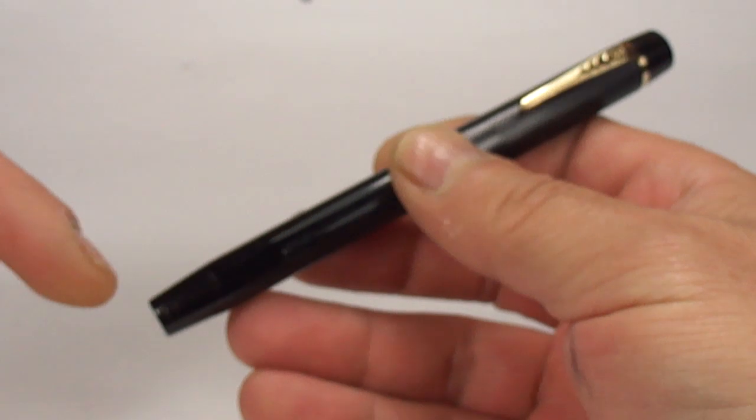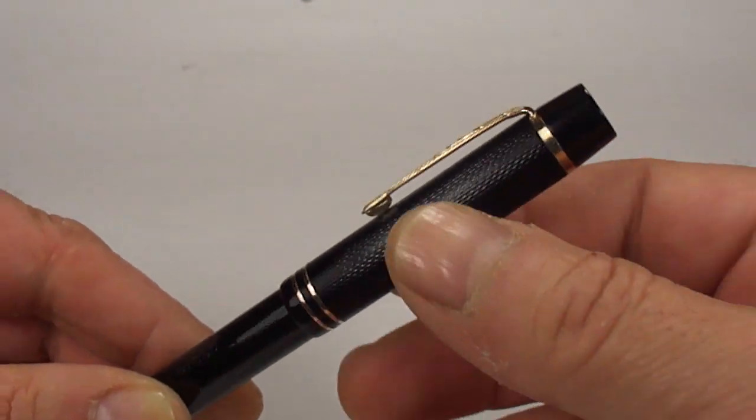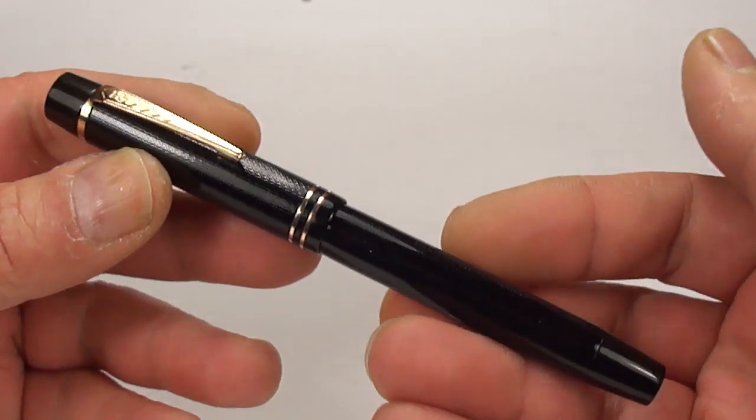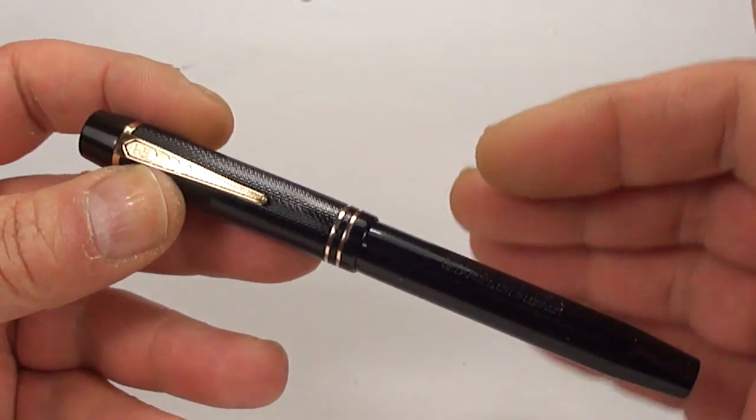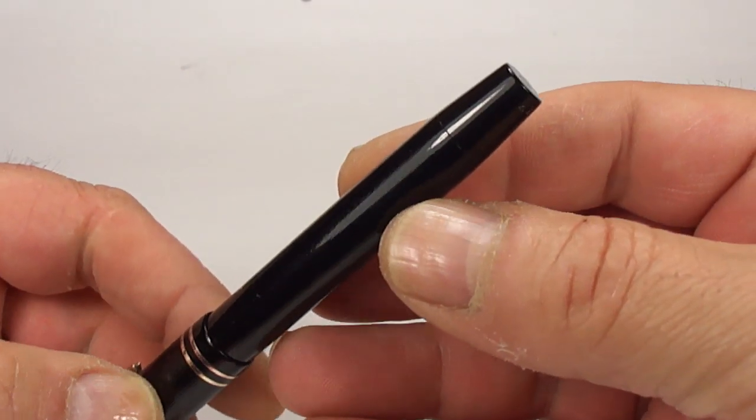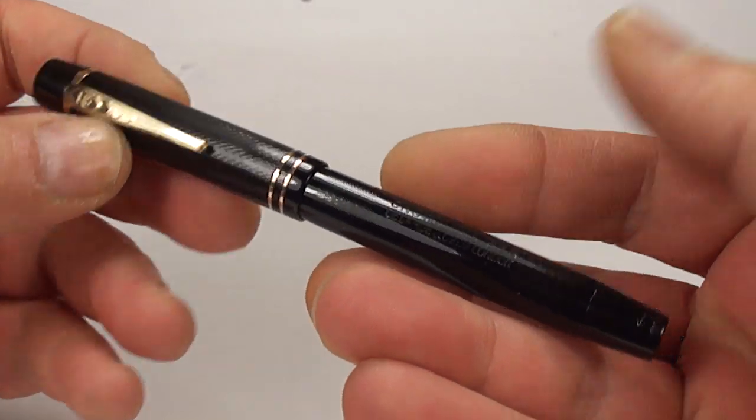Now, this pen came to me in a little bit of a sorry state. Normally, what you'll find is the top of the cap, this button here, and the plunger at the bottom tend to discolor, which is what happened with this particular pen. But we've fully restored it, and you can see it's a lot blacker now, and it's matching the rest of the pen. Absolutely lovely pen.